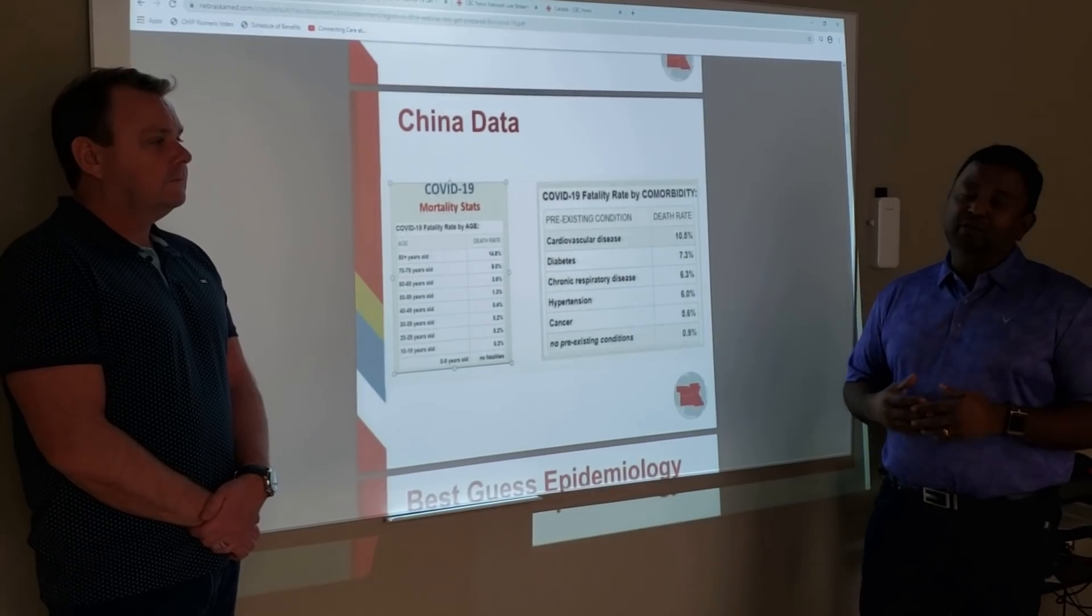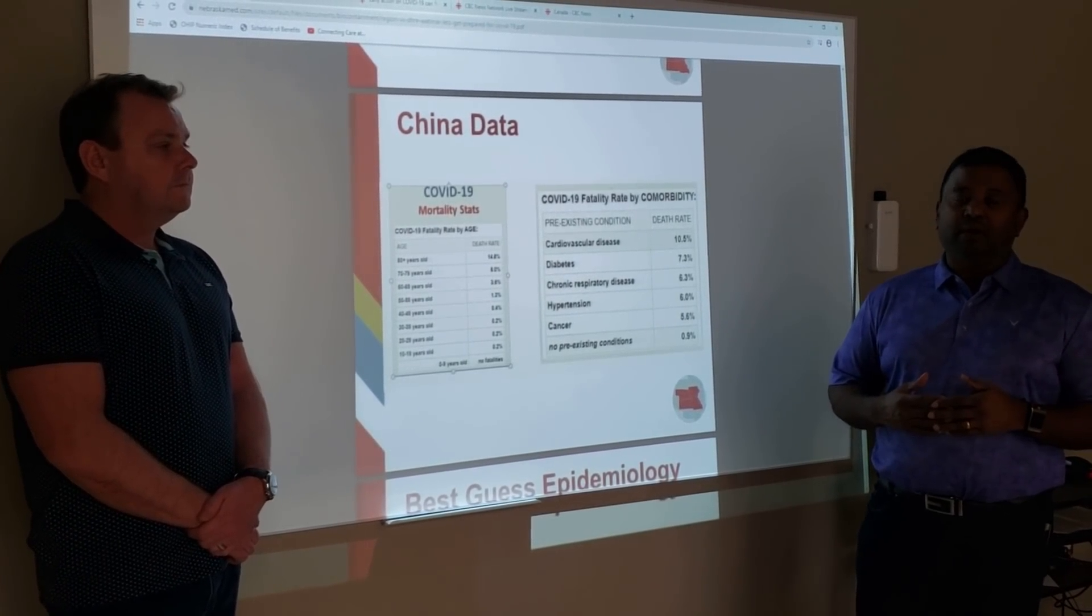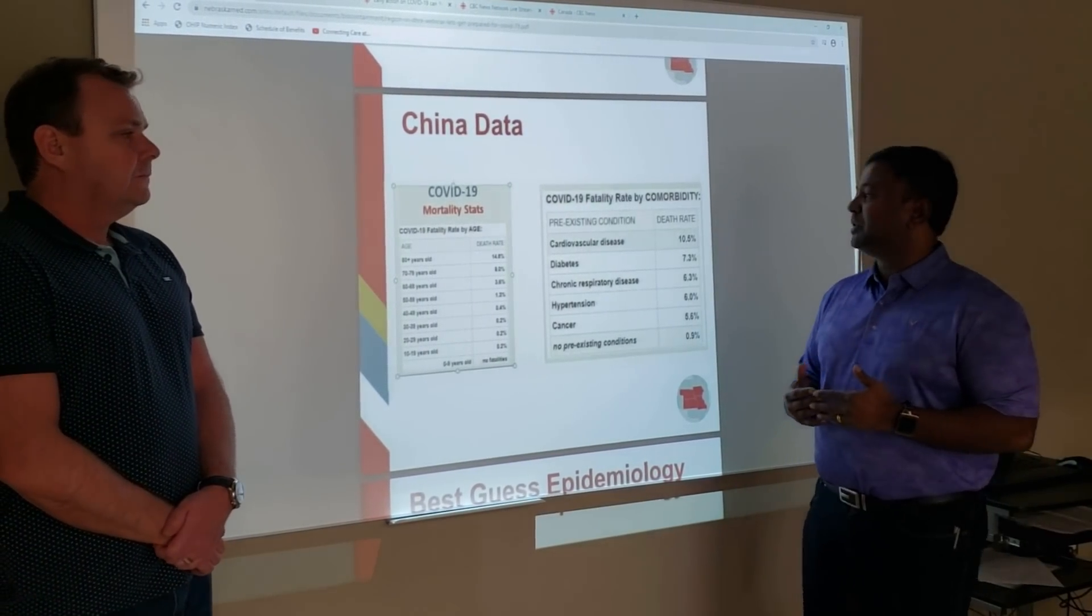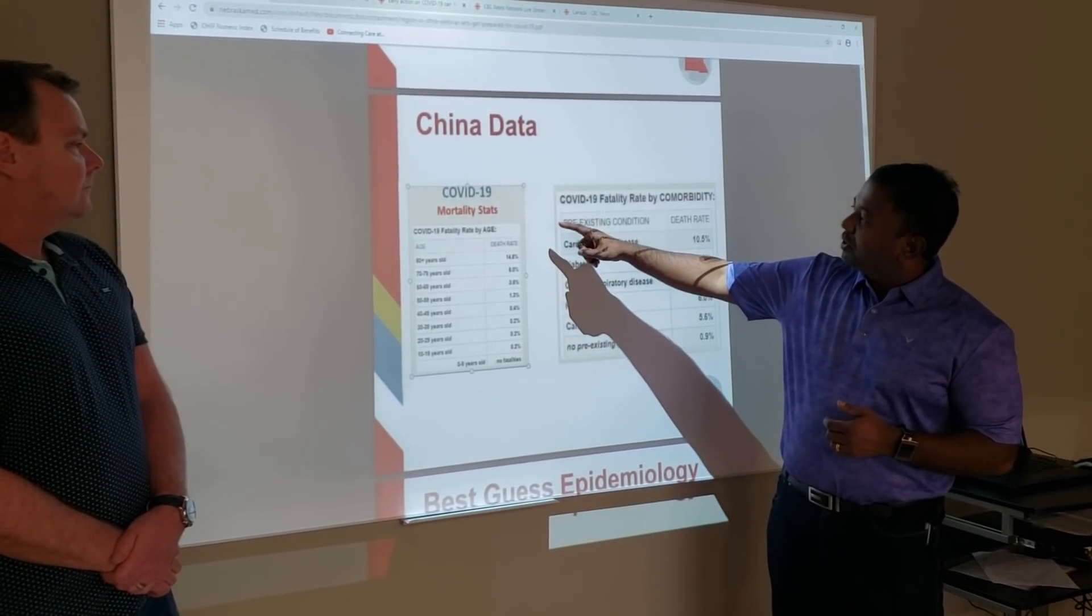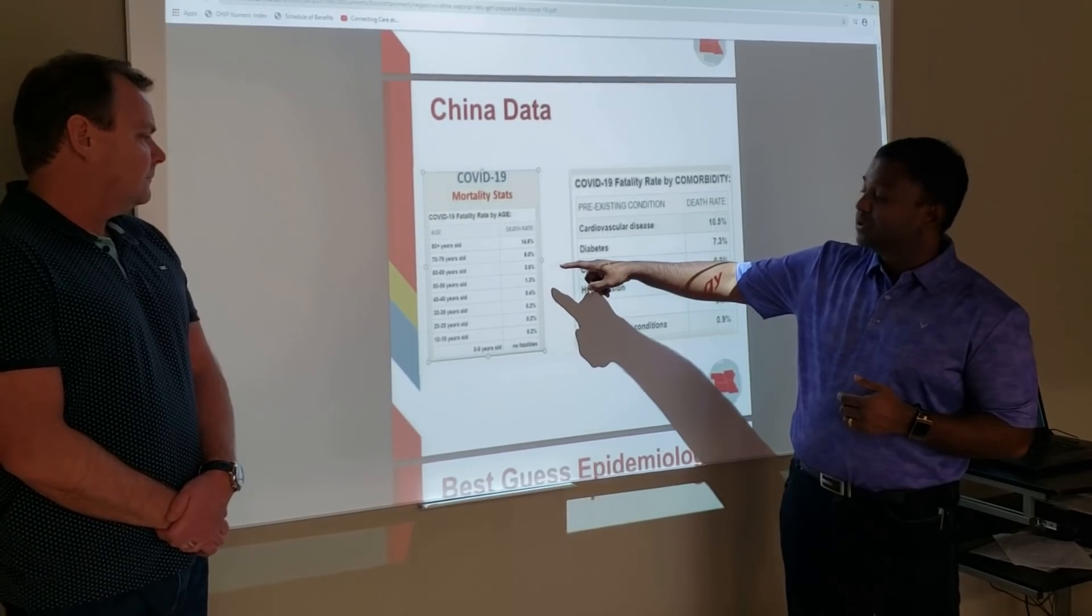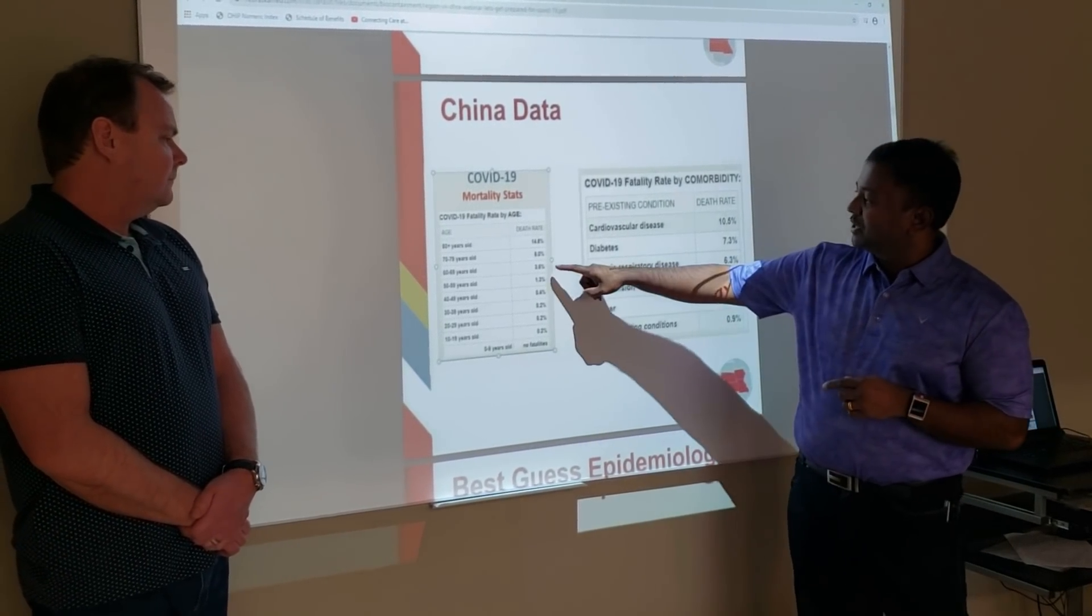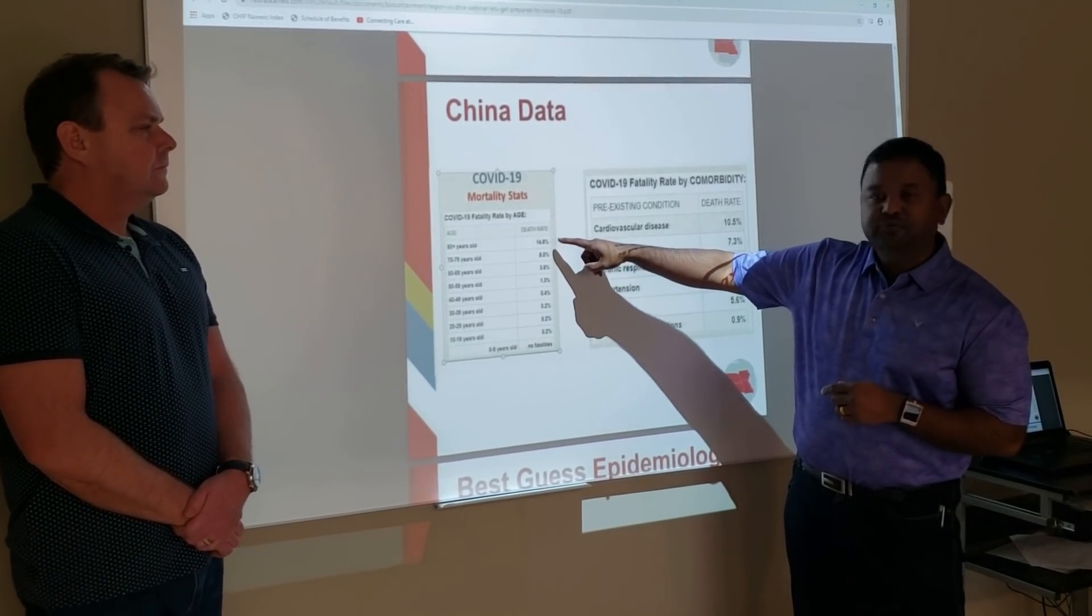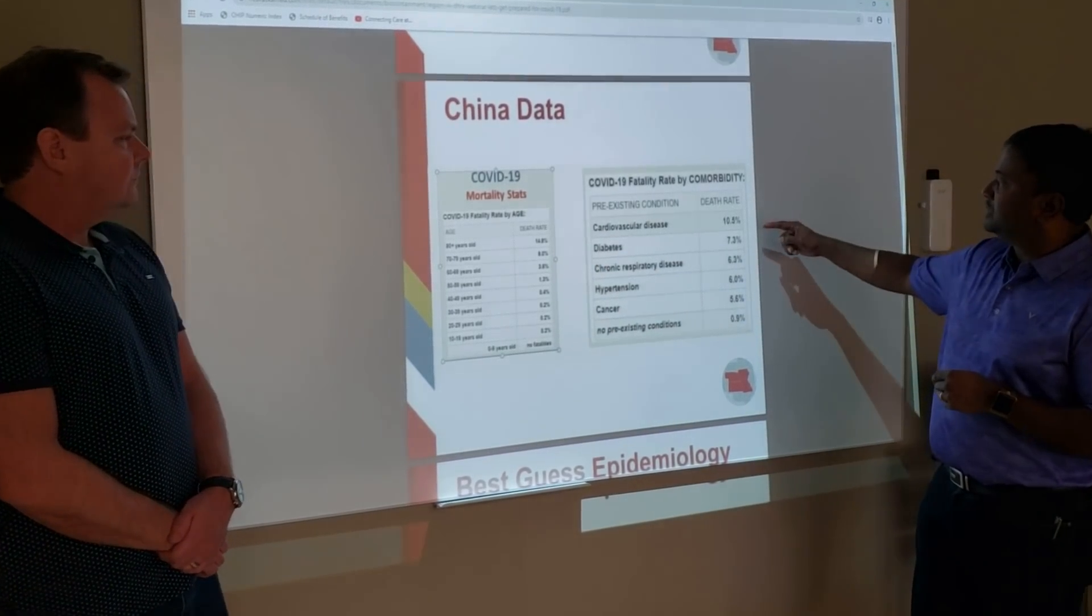The first bit of data comes from a slide presentation from Nebraska Medical and they showed the data from China, which is really concerning to us. When you look at this data, the COVID mortality stats for anybody over the age of 60 to 69 is really concerning. Anybody in the 60 to 69 age group has a mortality rate of 3.6%, 70 to 79 of 8.0%, and 80 plus 14.8%. But you also have to be concerned about who is at risk.